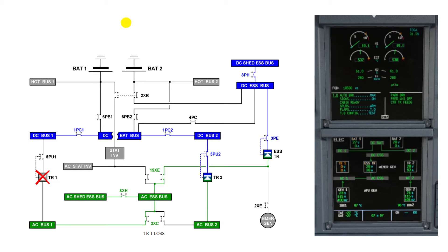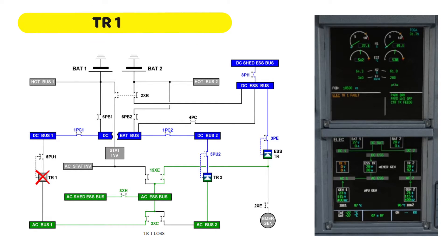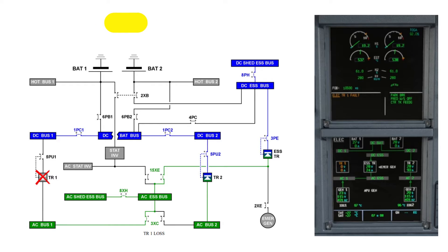If TR1 fails, TR2 automatically supplies DC Bat Bus and DC Bus 1 through DC Bus 2. The DC Essential Bus supply is automatically transferred from DC Bat Bus to AC Essential Bus through the Essential TR.